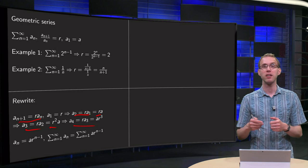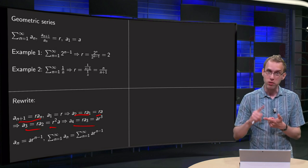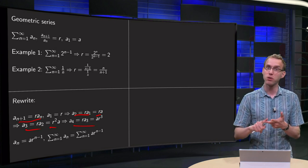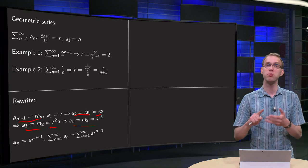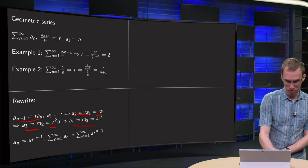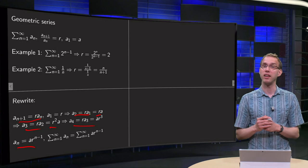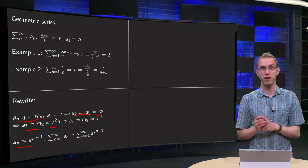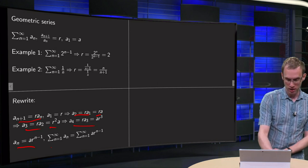Now you see the pattern: a_1 equals a, a_2 equals a times r, then we have a times r squared, then we have a times r cubed. So for the nth term of the sequence we have a_n equals a times r^{n-1}, so we can rewrite our sequence.